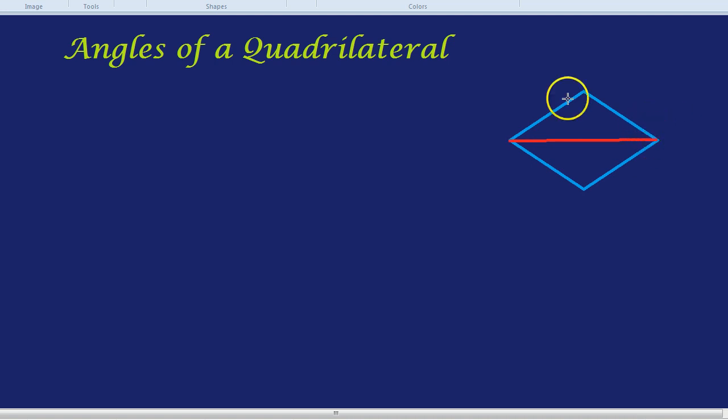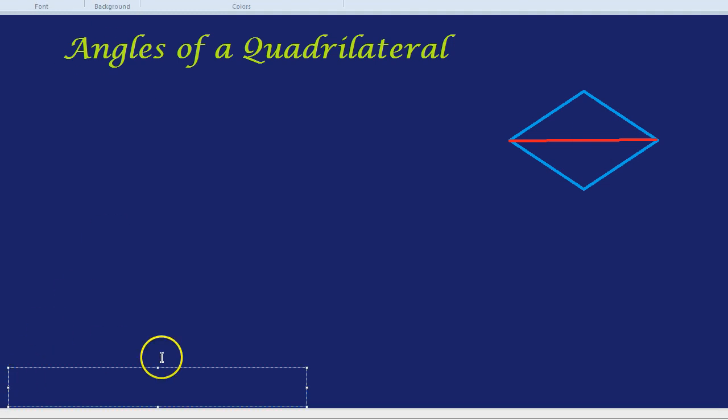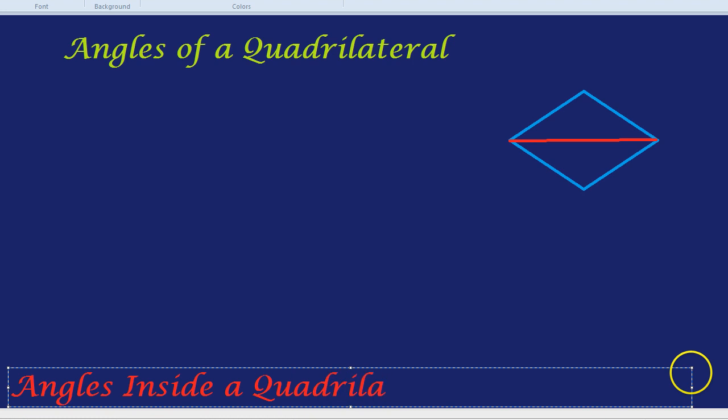If each triangle is 180 degrees, that means two triangles, which make up a quadrilateral, is 180 plus 180, which is 360 degrees. In other words, what we've discovered is that the angles in a quadrilateral always add up to 360 degrees.